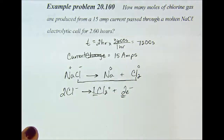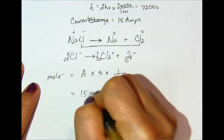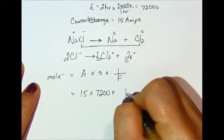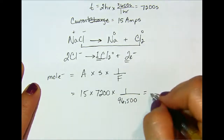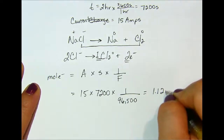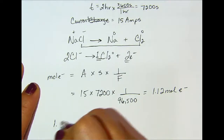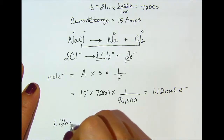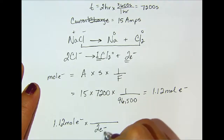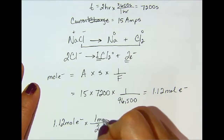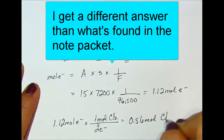Moles of electrons = amps × seconds × (1 / Faraday's constant, 96,500). Plugging in: 15 amps × 7,200 seconds × (1 / 96,500) = 1.12 moles of electrons. Then, to find moles of chlorine: 1.12 mol e⁻ × (1 mol Cl₂ / 2 mol e⁻) = 0.56 moles of chlorine gas.